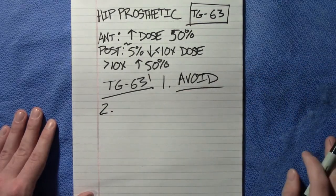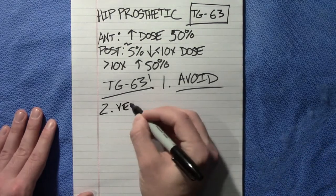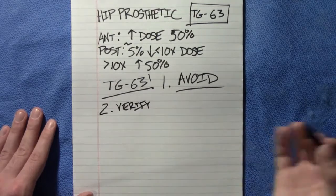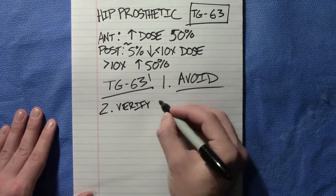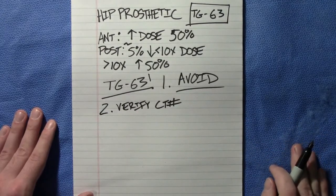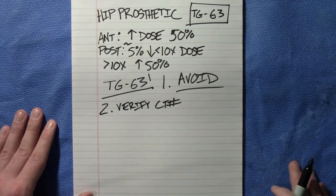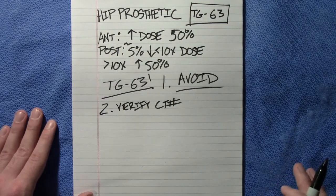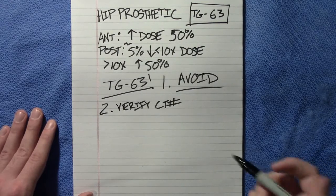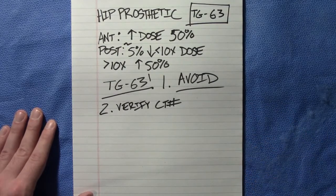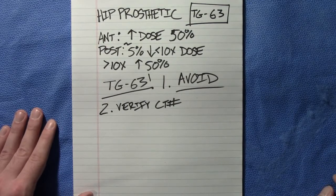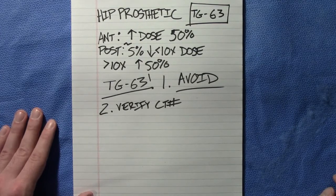Second, verify the CT number — typically by contacting the manufacturer or finding it in a reference resource — because you want to verify the dose calculation. You want to confirm that the CT can image it appropriately, and that your electron density curve goes high enough to capture it. If the CT number (Hounsfield unit) is extremely high, you may not have a corresponding value in your curve, and your dose algorithm will not produce an accurate dose distribution because it won't know how to handle it.